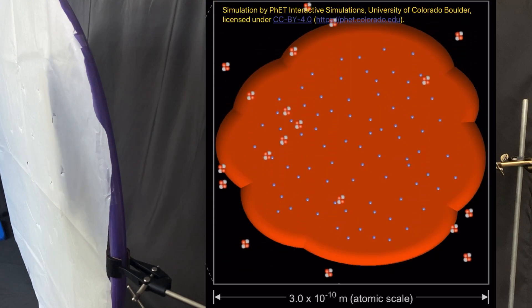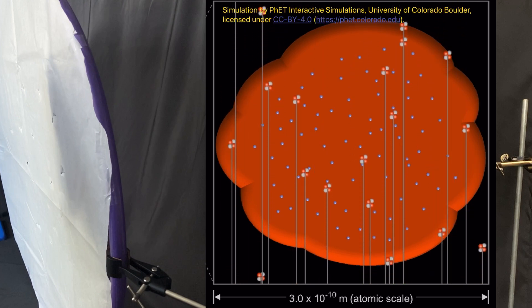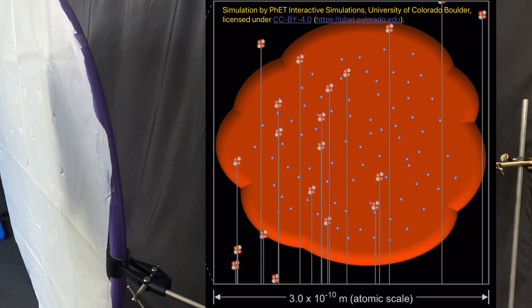You can also show this using the great PhET simulation where the spread out positive charge of the plum pudding model would not produce enough force to significantly deflect the alpha particles and so they pass straight through.